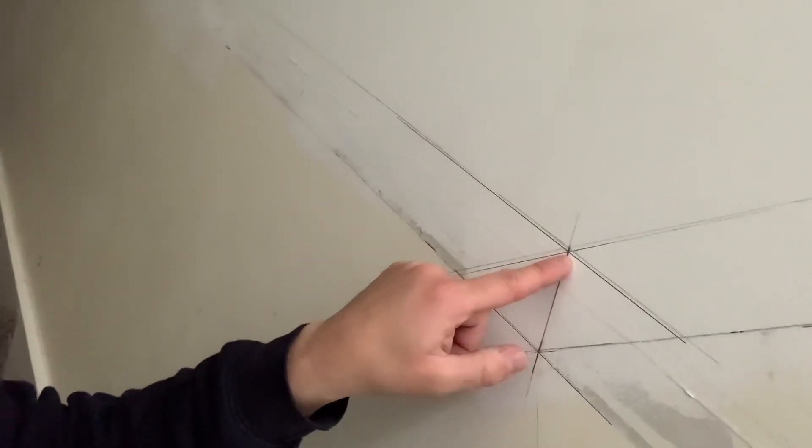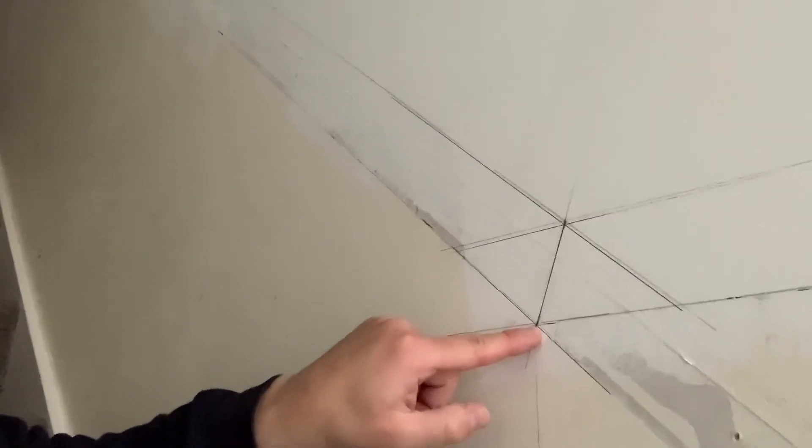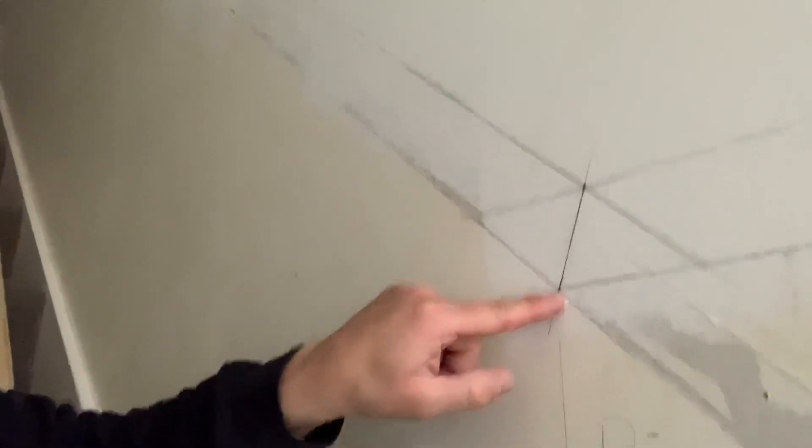So all we do is set the angle from the top there to the bottom on the sliding bevel. Then all we've got to do is set the bevel to the same angle as the chop saw, or the chop saw to the same angle as the bevel.